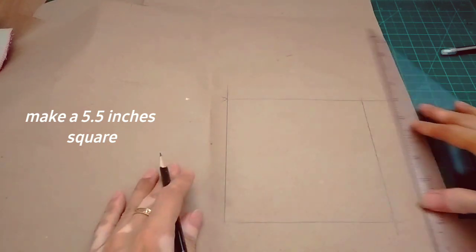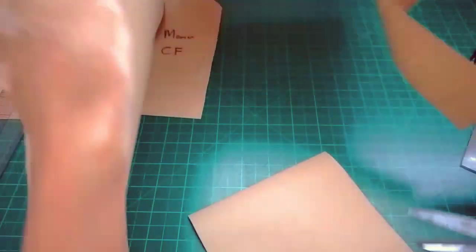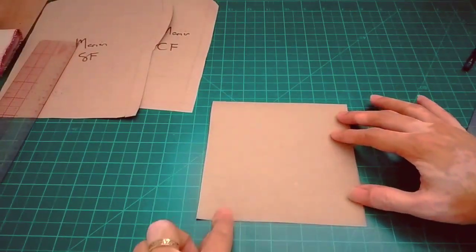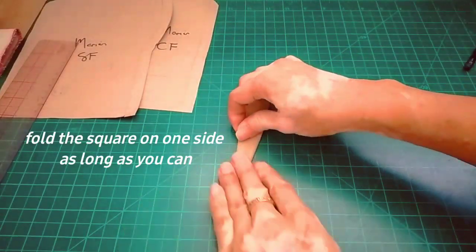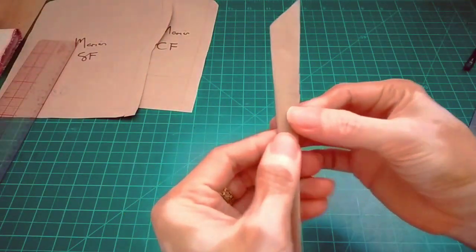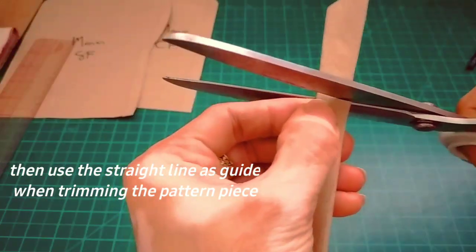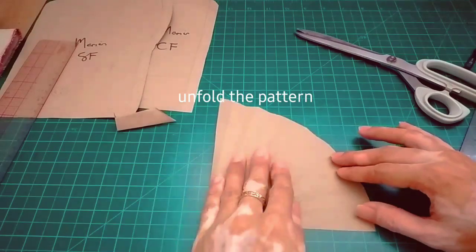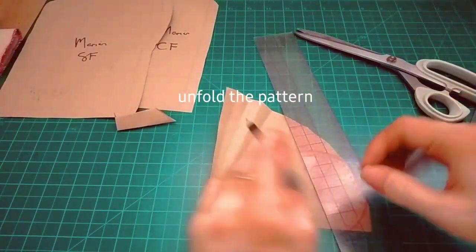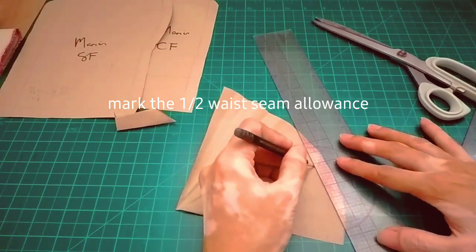Next, make a square using the answer you got from the formula. What we have here is a 5.5 inch square. Cut off the excess paper, then unfold it and mark your 1½ inch waist seam allowance.